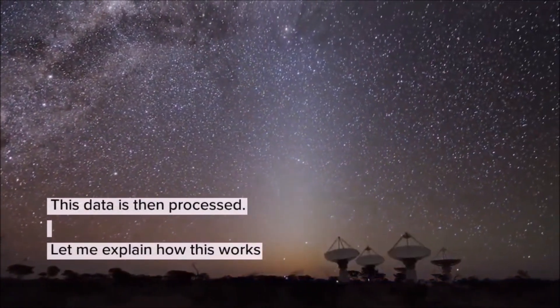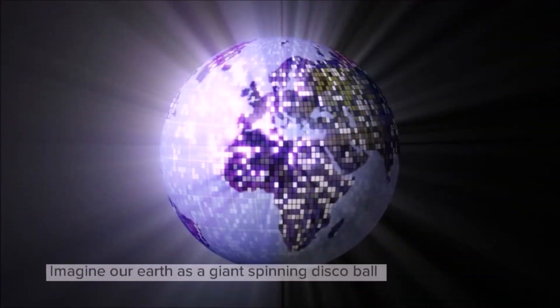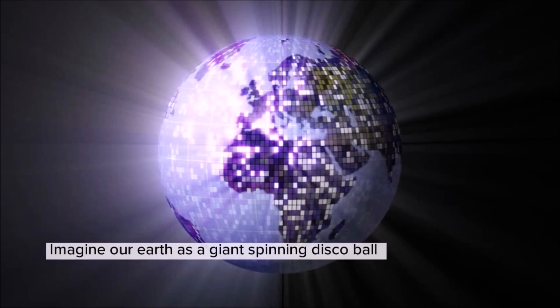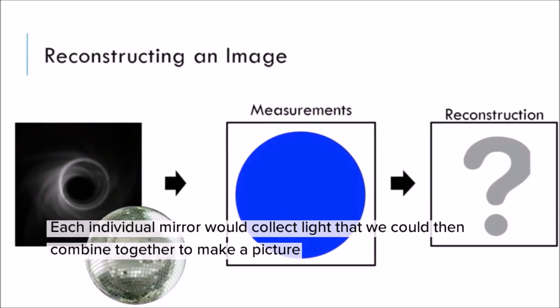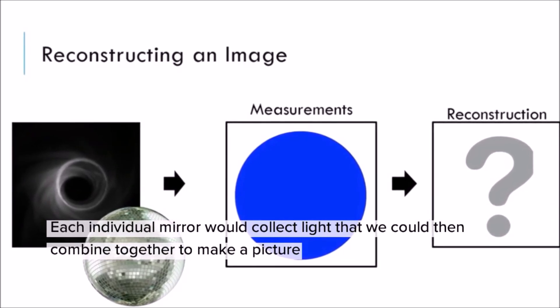Let me explain how this works. Imagine our Earth as a giant spinning disco ball. Each individual mirror would collect light that we could then combine together to make a picture.